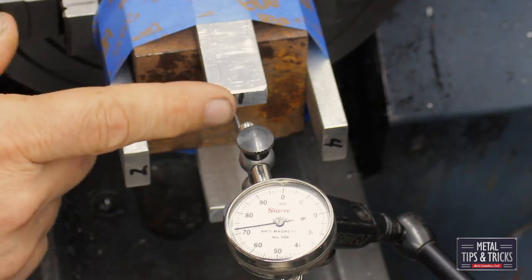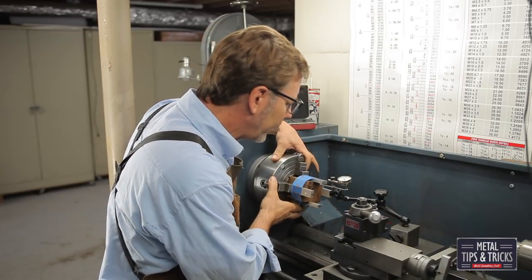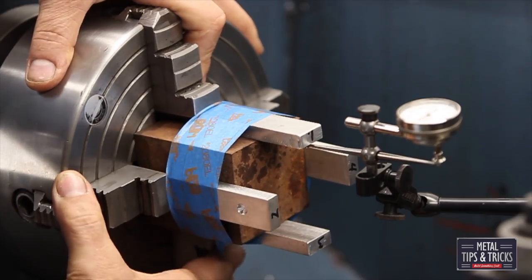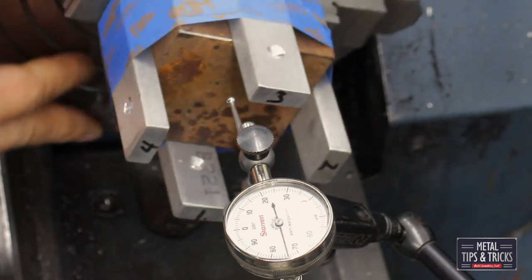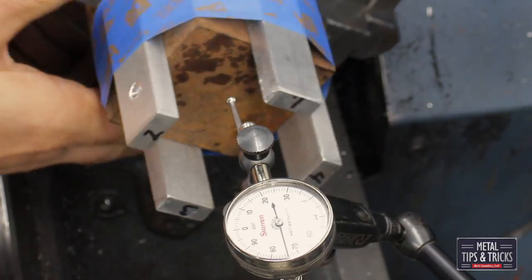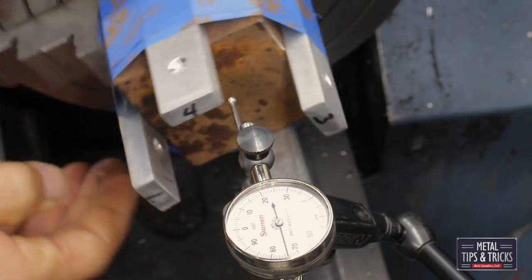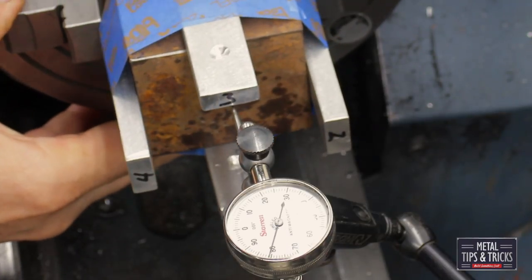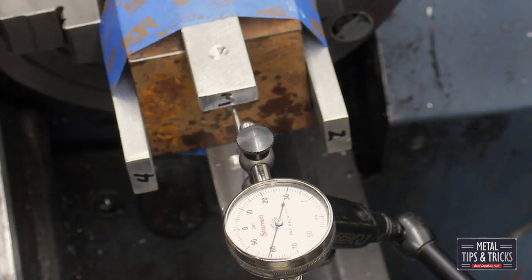So let's start out with number one here. So let's find out where it's at. We'll line up on one. We're just going to zero it out here. Back to one. Let's see what it looks like. About a thousandths off. Okay, so we have about twenty thousandths difference.